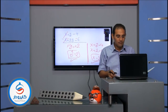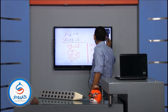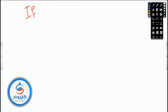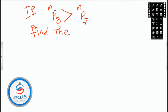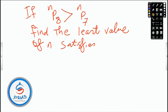There is another nice and small problem that students find scary but it is actually simple. Given: n permutation 8 is greater than n permutation 7. Find the least value of n that satisfies the inequality.